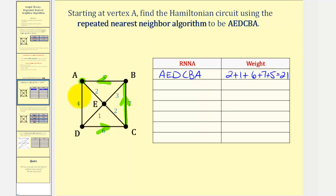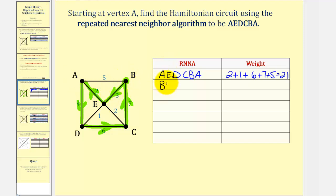Now starting at vertex B, the closest vertex is E since edge BE has a weight of 3. From E, we can visit A or C, but both edges have the same weight, so we'll get two circuits starting at B. First visiting A: from E to A, then D, then C, then back to B. This gives circuit BEADCB with a total weight of 3 + 2 + 4 + 6 + 7 = 22.